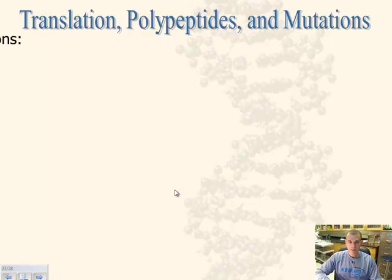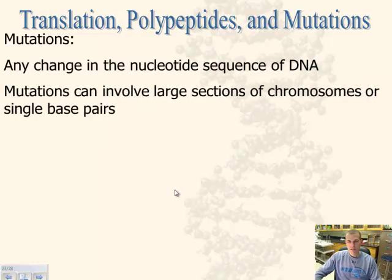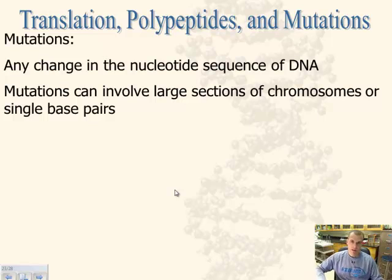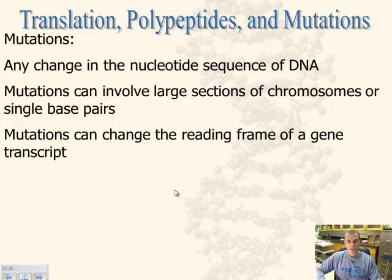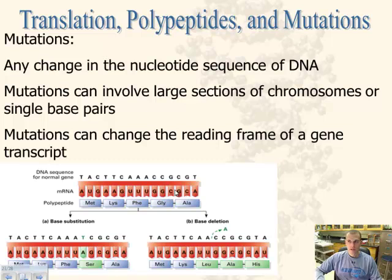There are mutations that do occur in the DNA sequence that could eventually affect what protein we're actually coding for. Mutations are defined as any change in the nucleotide sequence of DNA. Mutations can involve large sections of chromosomes, or it could be just one letter — like an A being replaced by a T, or a G replaced by a C. It could have a huge effect or no effect depending on where it's at. Mutations can change the reading frame, and if that happens, there are going to be larger effects on the protein being coded for.